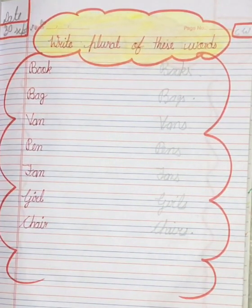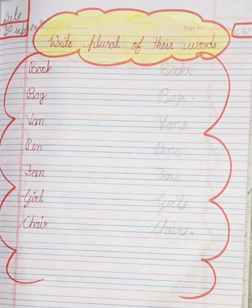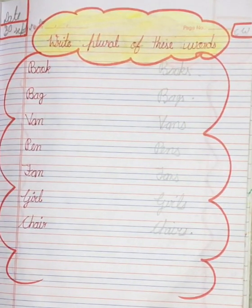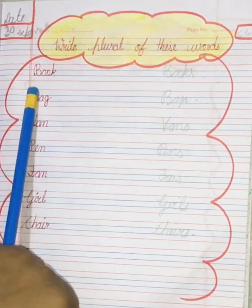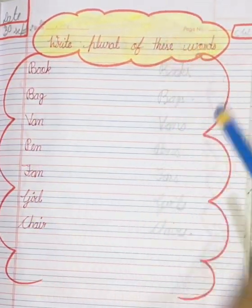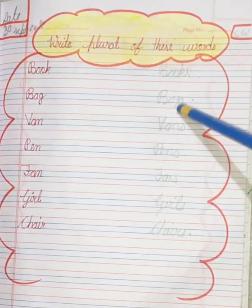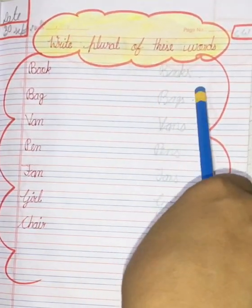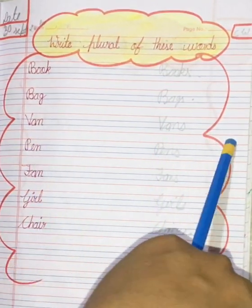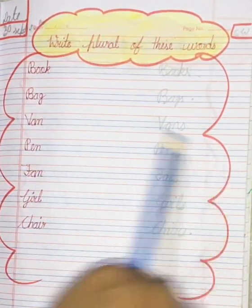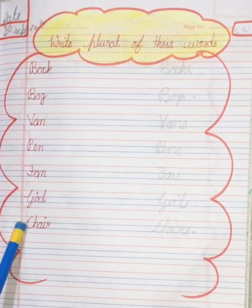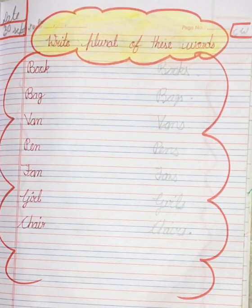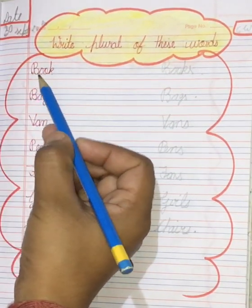Today's topic is: write the plural of these words. आपको इन words का plural बनाना है। Singular दिया हुआ है, तो आपको plural बनाना है। Plural में क्या होगा? बस S जोड़ दो इन सब के पीछे। जैसे book है तो books हो जाएगा। Bag है तो bags हो जाएगा। Van तो vans हो जाएगा। Pen तो pens हो जाएगा। इन सब के पीछे only S add हो जाएगा, और ये plural बन जाएगा।